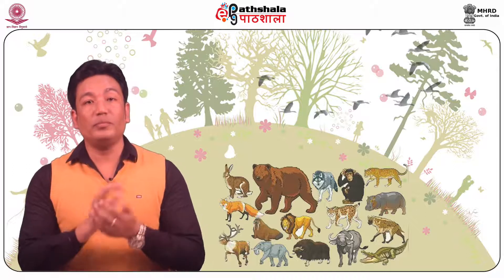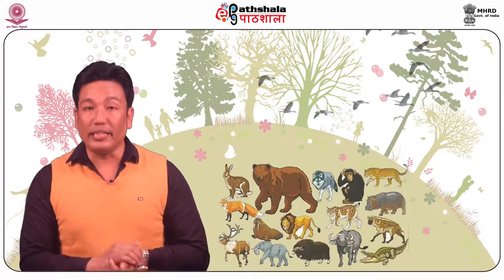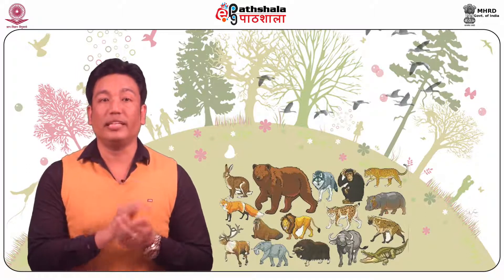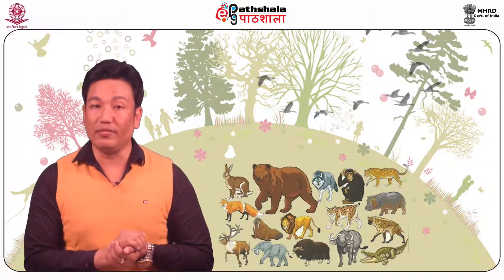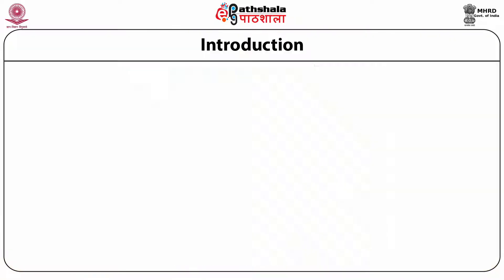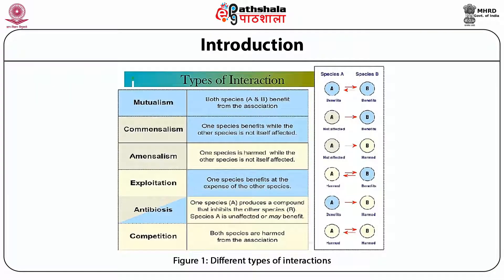The evolution process and theories of some of these interactions are briefly discussed in this chapter. This figure represents different types of interactions. Mutualism: both species A and B benefit from the association. Commensalism: one species benefits while the other species is not itself affected.